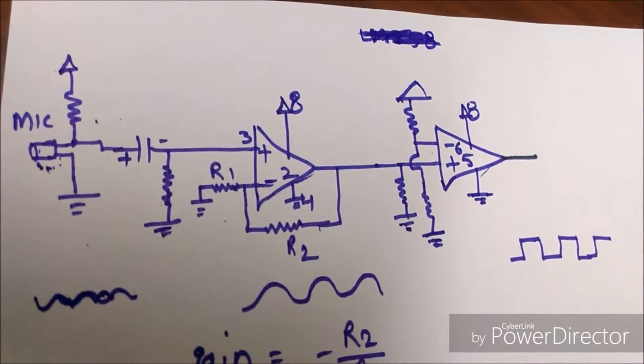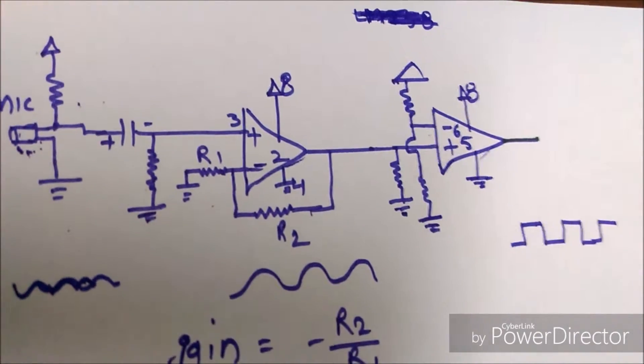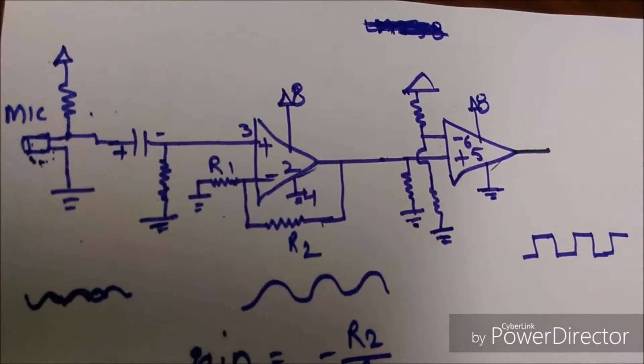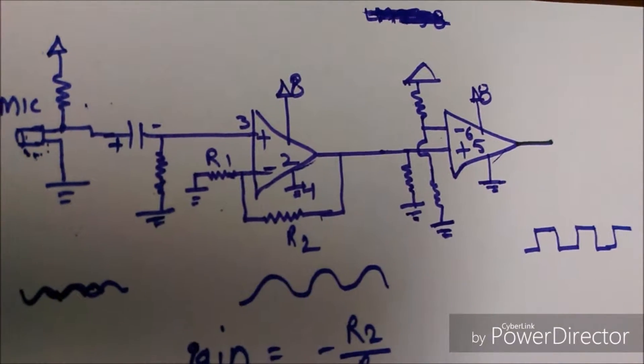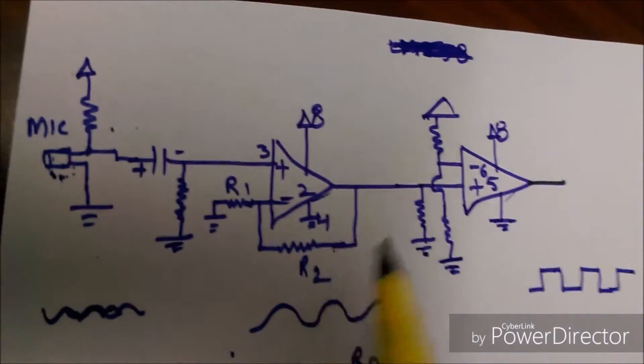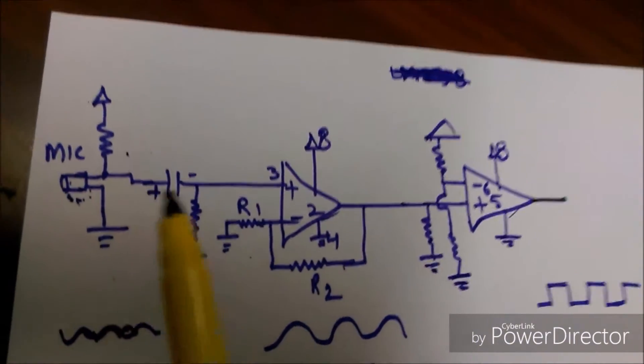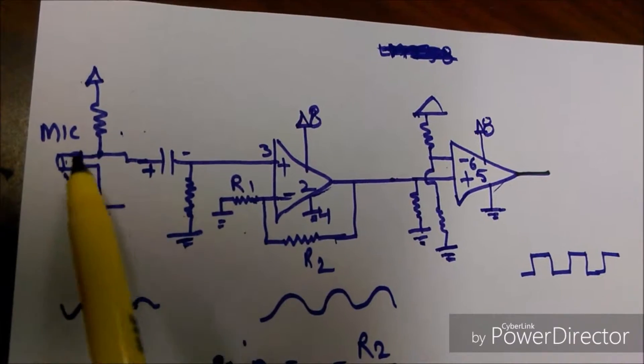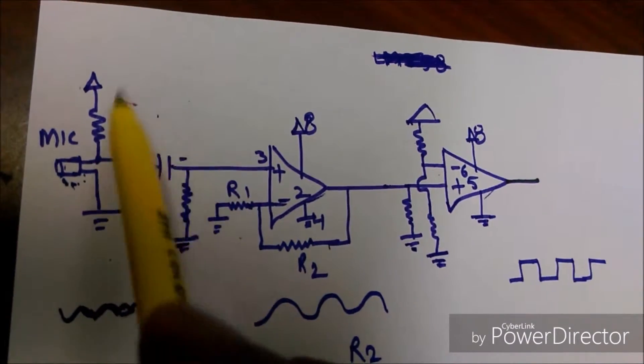So let's see how it's working. Actually, the clap switch consists of two parts: one is the sound sensor and the second one is a toggle switch. Let's first talk about this sound sensor. It consists of two op-amps, a mic, capacitor, and resistors. As you can see, here is a mic that is powered by this resistor and this power supply.